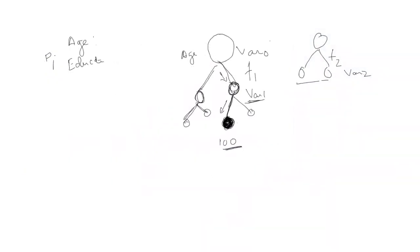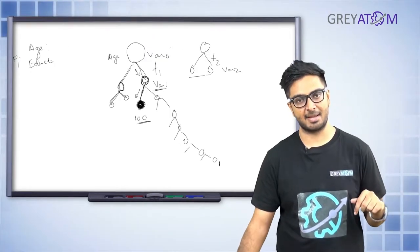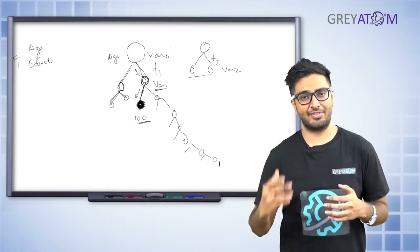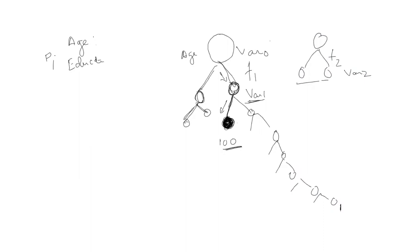Basically, you keep on splitting until you reach a point where you have a node for each particular data point in the dataset. That is extremely overfitted - you have fitted a model which fits to every data point, stopping only when each node consists of one data point.